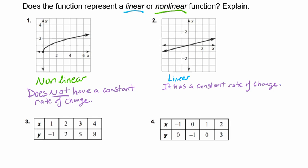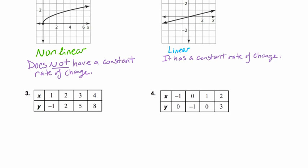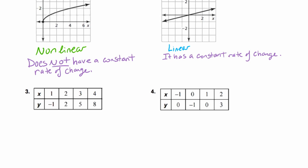Let's take a look at our third one. Here we don't have a visual representation of what the line looks like, so we can't simply say it's curved or it's straight. But for numbers 3 and 4, we can look at the rates of change and see if they're constant or not constant. Let's take a look at number 3.